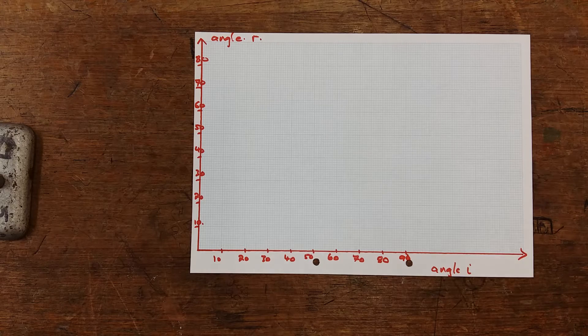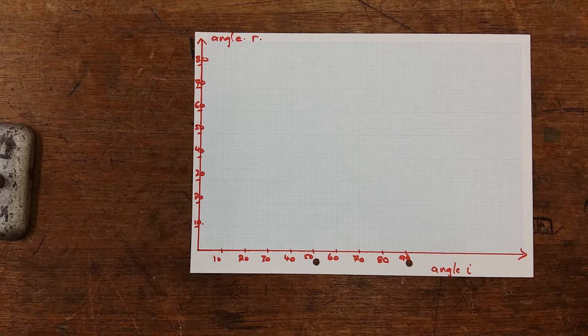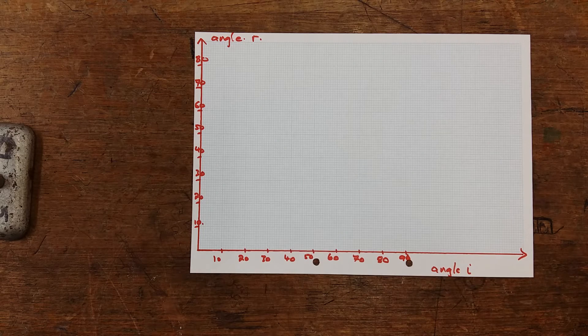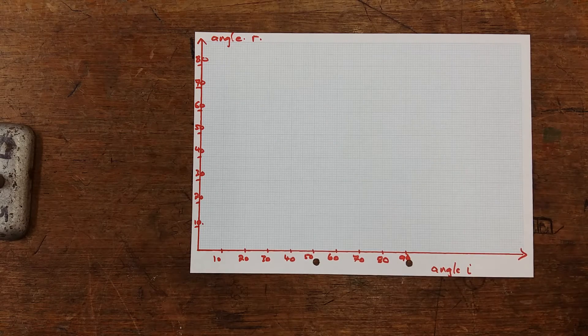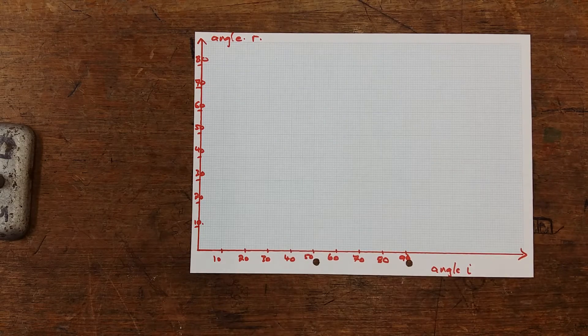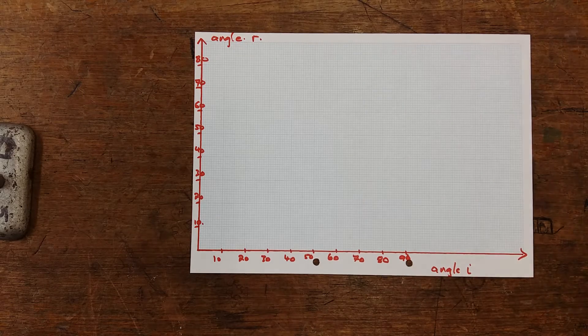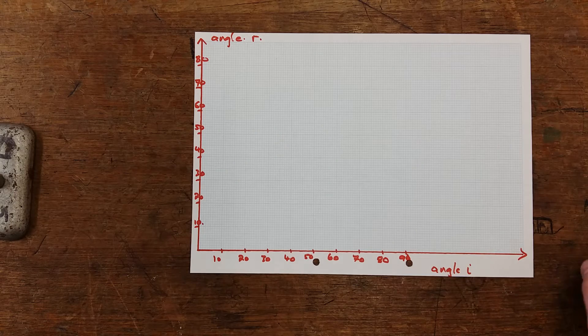We've kept our scale nice and simple because we're looking at different angles, and we know angles can range from 0 to 90. We've just followed those scales. What we'll plot on there, and this will be our first graph, we're going to plot air to glass.